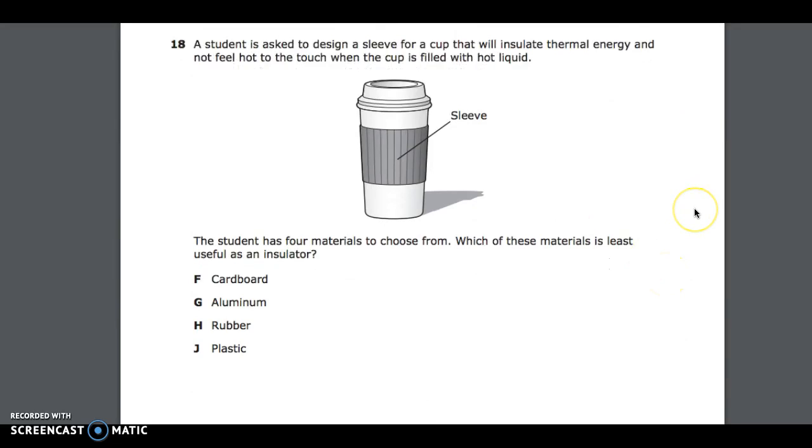Number 18. A student is asked to design a sleeve for a cup that will insulate thermal energy and not feel hot to the touch when the cup is filled with hot liquid. The student has four materials to choose from. Which of these materials is least useful as an insulator? F, cardboard; G, aluminum; H, rubber; J, plastic.